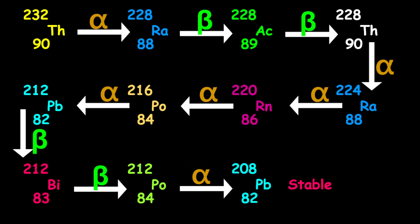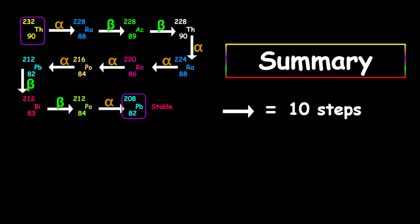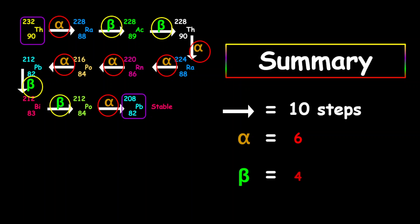Now we're going to use this decay series and analyze a few things. As a summary of the entire decay series, the first element is thorium-232 and the final element is lead-208. We have a total of 10 steps, or 10 decays. Breaking this down: the total number of alpha decays is 6, and the total number of beta decays is 4. So 6 alpha decays and 4 beta decays give us our 10 total decays.